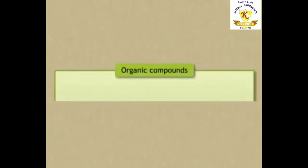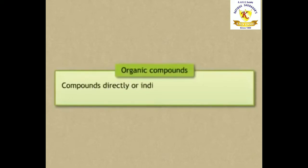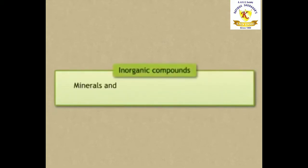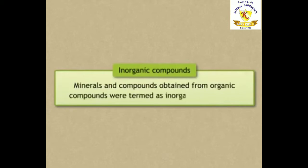First let's see organic compounds. Compounds directly or indirectly obtained from plants and animals were regarded as organic compounds. Inorganic compounds are minerals and compounds obtained from organic compounds and were termed as inorganic compounds.